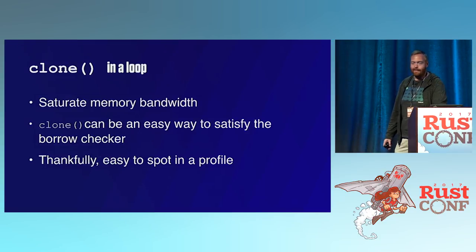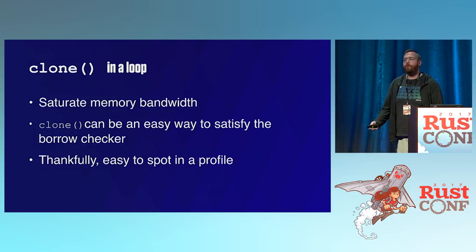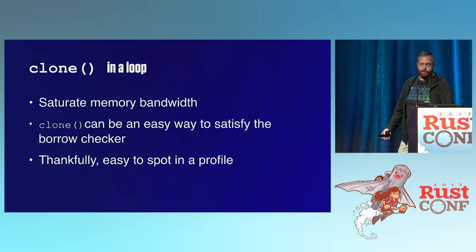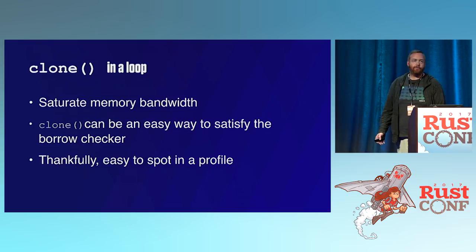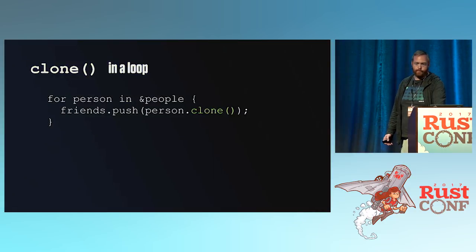Doing clone in a loop is something that can kill performance by saturating your DRAM bandwidth. The nice thing about clone is it's explicit — you'll see it at the very top of a profile. Here's a contrived example of going through a people vector and pushing them into another friends vector.